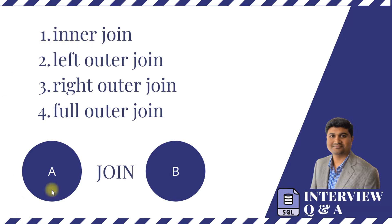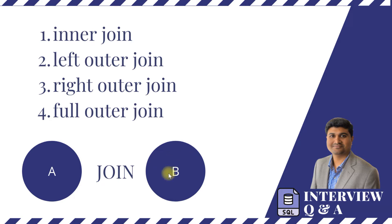The very first type of join is the inner join. Let's say you have two tables, Table A and Table B, and you want to bring in only the matching data. That's when we use inner join. For example, if you have a department table and an employee table and you want to do some aggregation for employee data for only the matching records from the department table, we use inner join.